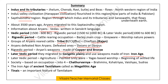In the later Vedic period, agriculture became more prominent. Painted Grave pottery was used, and Yagas-based worship started. This marks the beginning of settled life and a society divided based on occupation into four groups called Chaturvarna — that is, Brahmans, Kshatriyas, Vaishyas and Shudras.